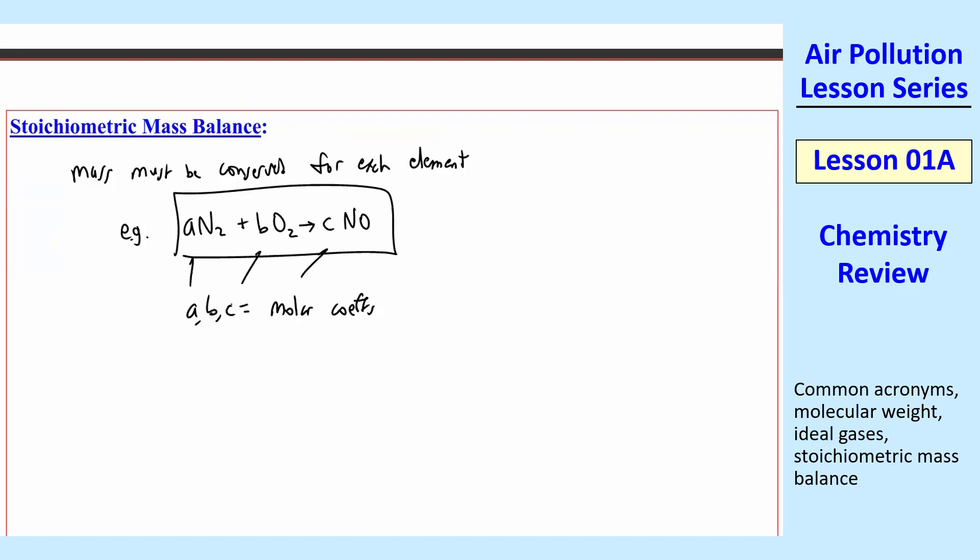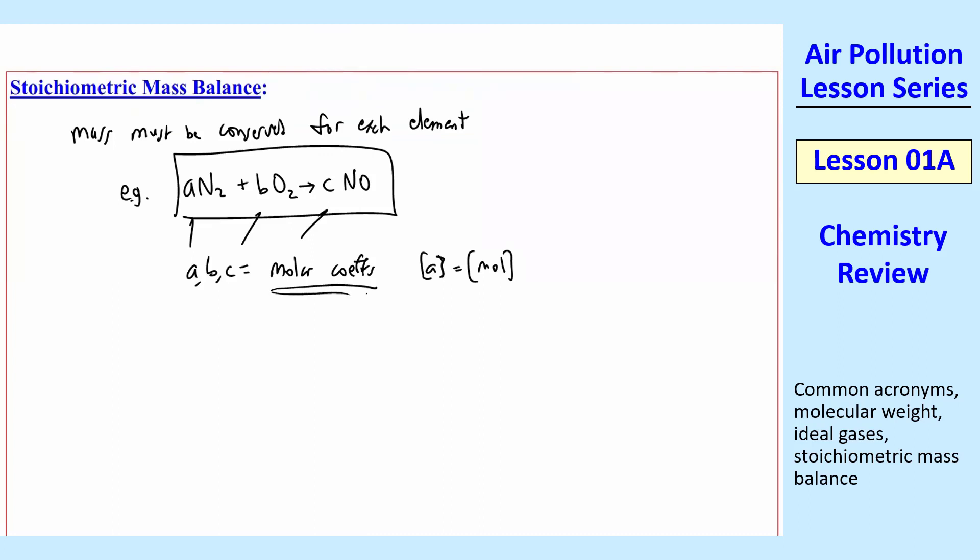You can think about this equation. These A, B, and Cs can either be individual molecules. So A molecules of N2 plus B molecules of O2 yields C molecules of NO. Or what we typically do is think of them as moles instead. So these have the dimensions of A and B and C are just moles. So A moles of N2 plus B moles of O2 equals C moles of NO. So we call these molar coefficients.